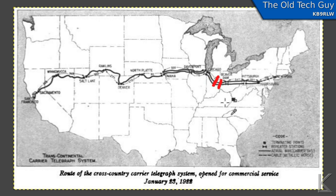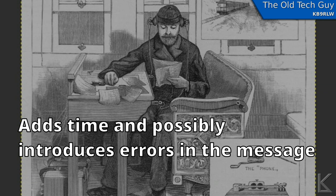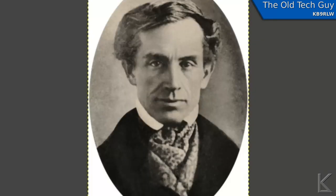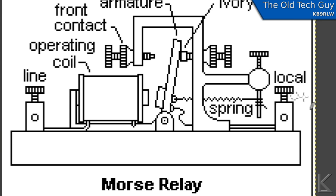So that's a problem. Each of those stations would have a telegraph operator that would sit there and record or write down the message coming in, then turn around and resend it down the wire to the next station. And each of these operators — you had to feed them, you had to house them, you had to pay them. So there must have been an easier way to do this. And good old Morse came up with something.